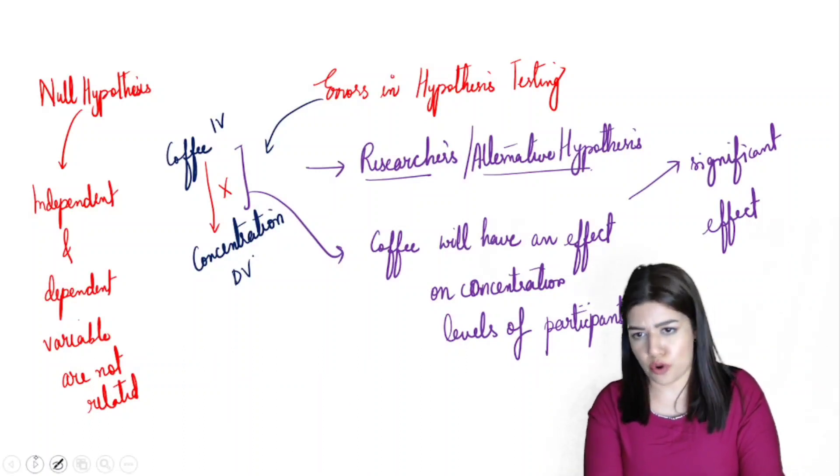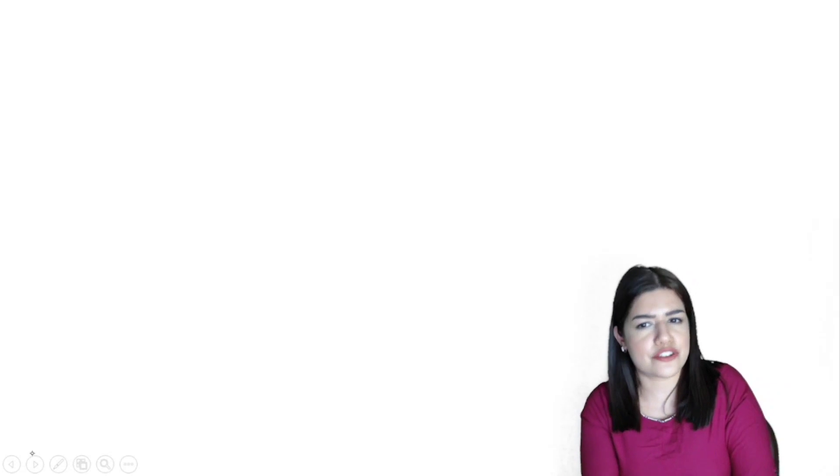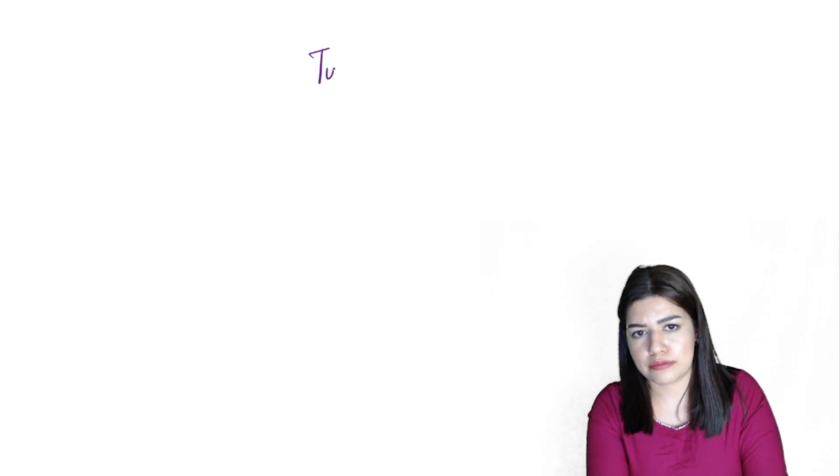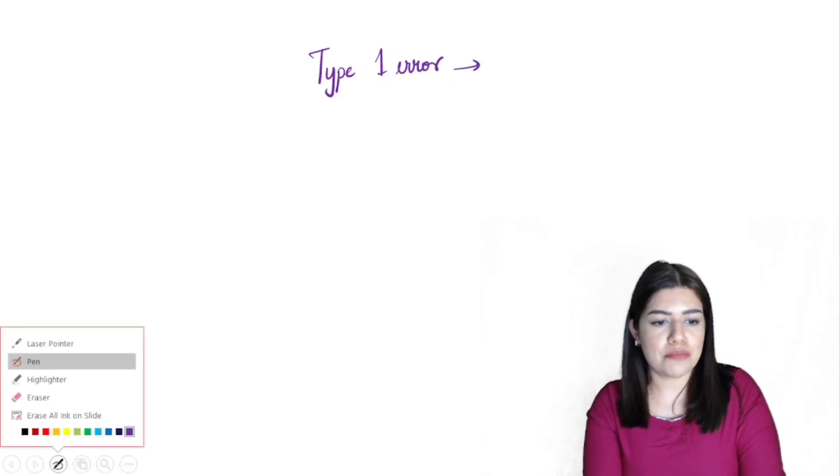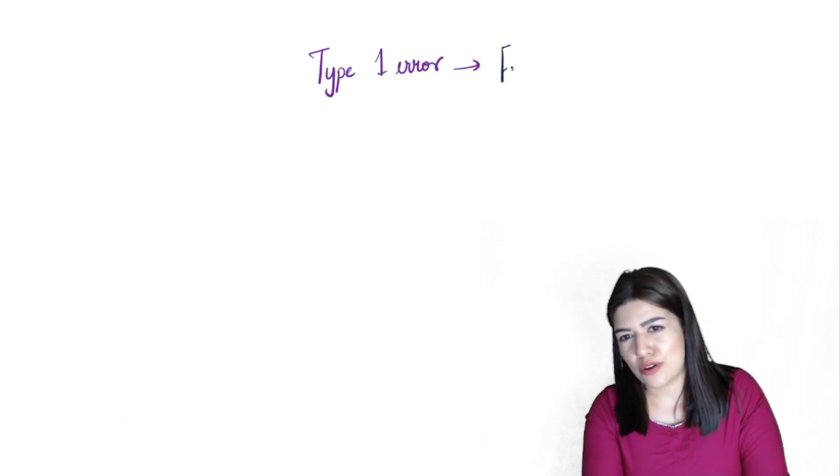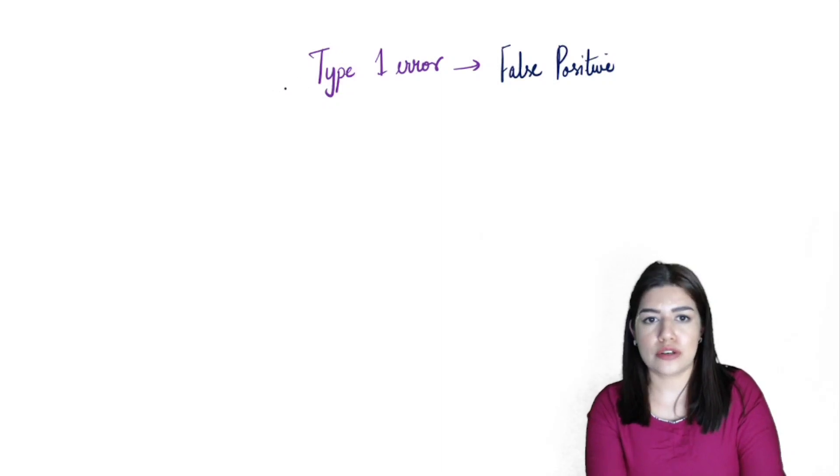Now what happens when this actually goes wrong? Not 100% of the time can we say that the null hypothesis was correctly rejected. Sometimes we end up making mistakes, and therefore we have the Type 1 error. The Type 1 error is also known as a false positive. That means we are accepting our alternative hypothesis, but that result isn't genuine.